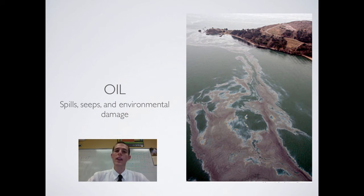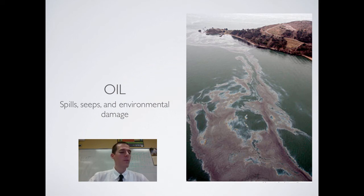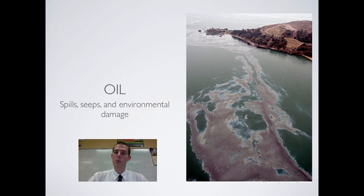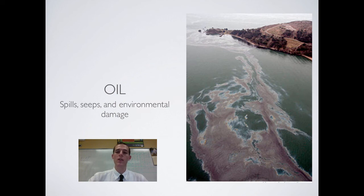Another interesting thing is that oil naturally seeps into the environment. Where oil deposits are close to the surface of the earth, they will actually seep out — something like half of the oil that ends up in American waterways on a yearly basis is actually the result of natural oil seeps underground. But environmental damage from a big-scale oil spill is obviously a huge problem. The oil itself will kill almost any organism it comes into contact with, killing most algae and plankton either through poisoning or by blocking sunlight. The BP Horizon oil spill is still having really significant impacts on the fishing industry in the Gulf of Mexico.